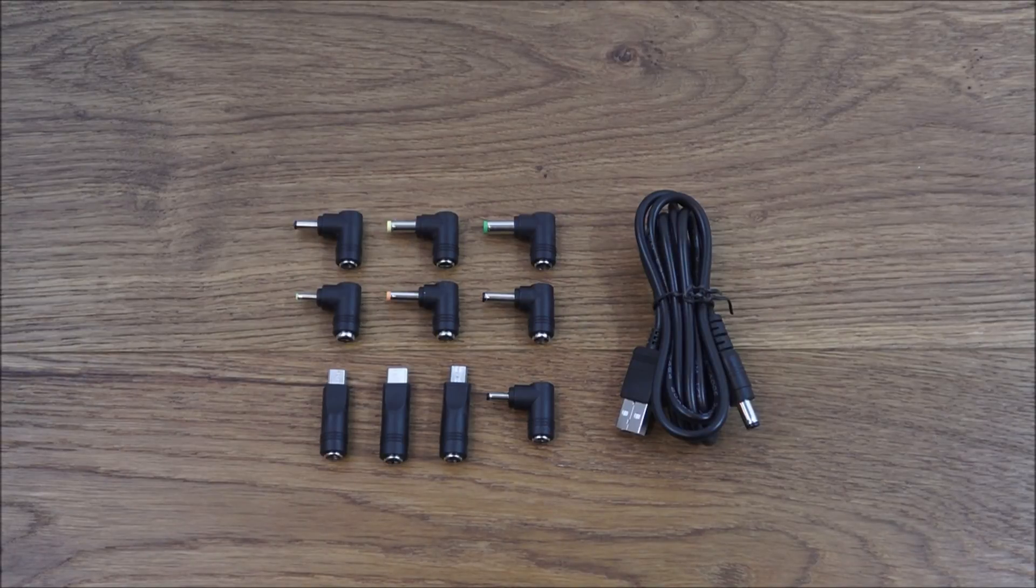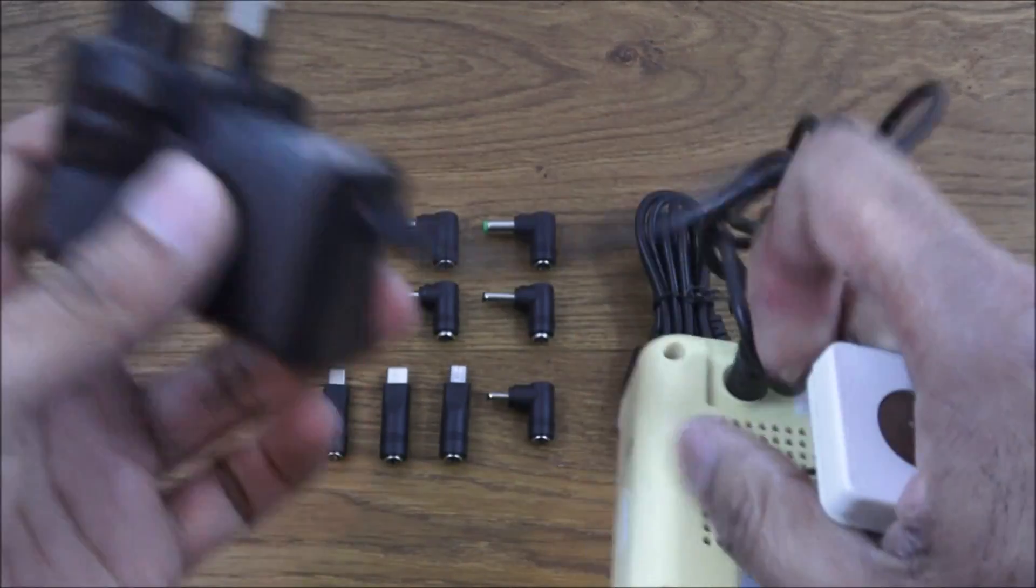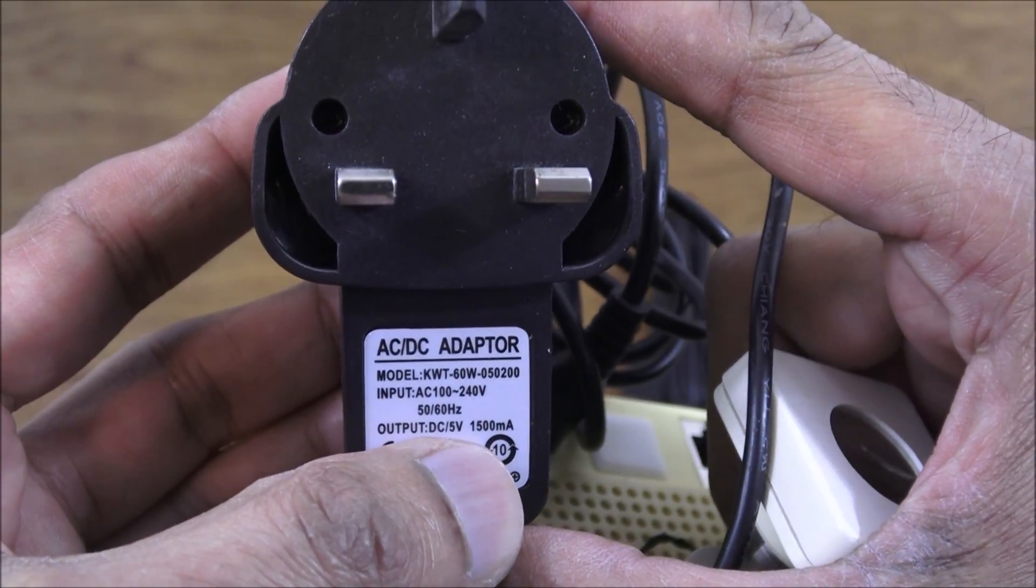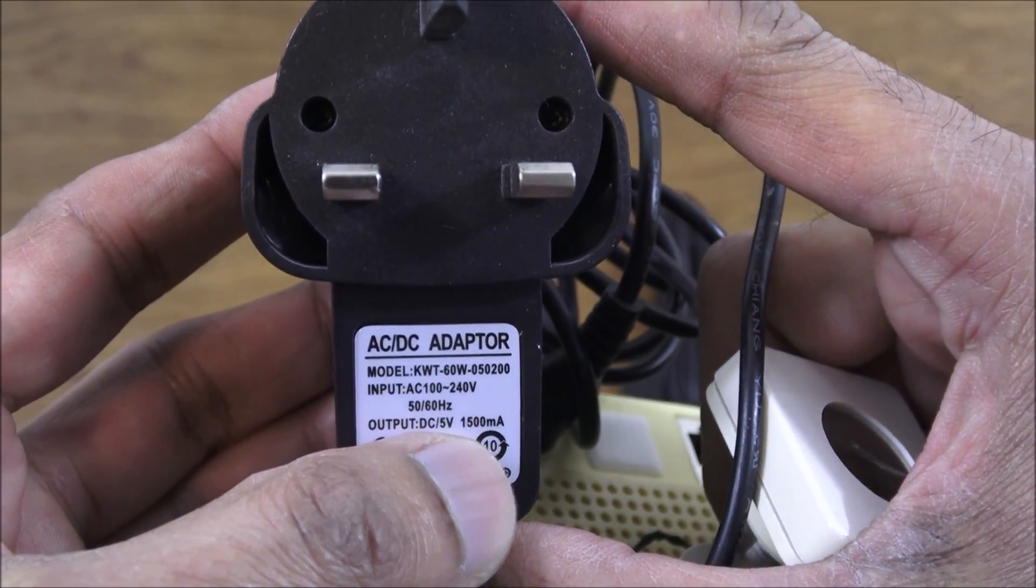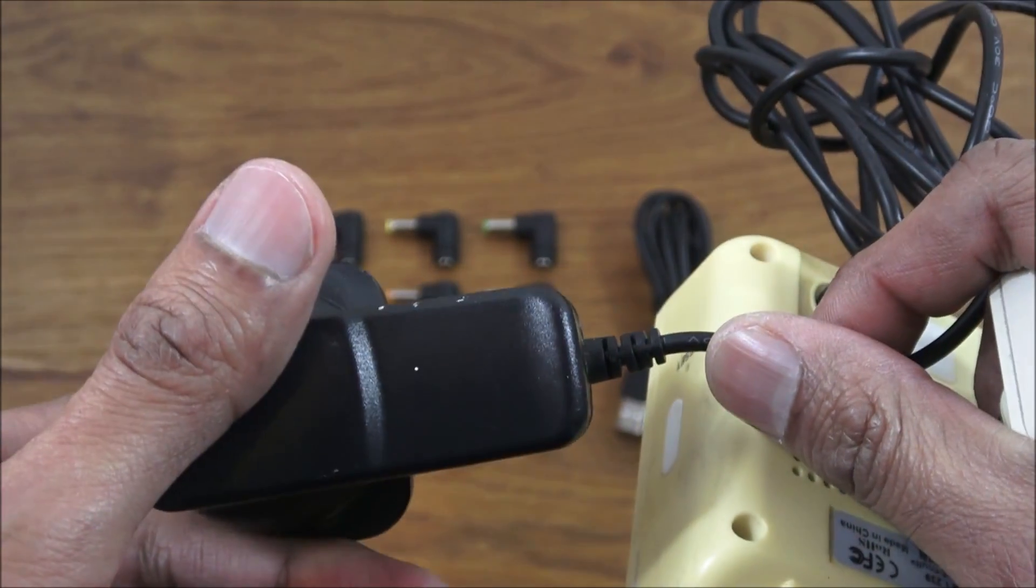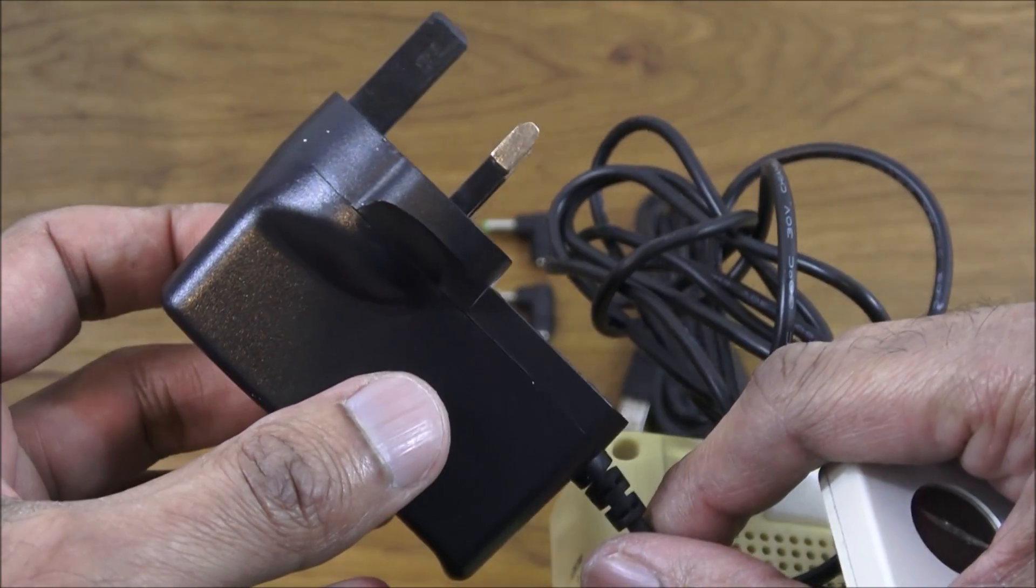I was in a situation once where I had an IP camera, an indoor one, and the power adapter actually broke on there. This is a similar product. Just to show, the output is 5 volts and 1500 milliamps.